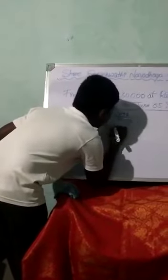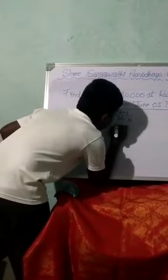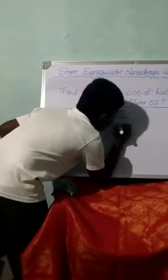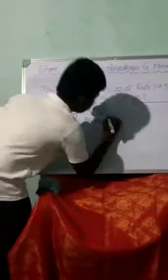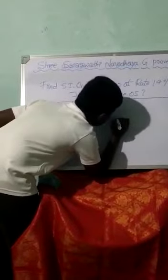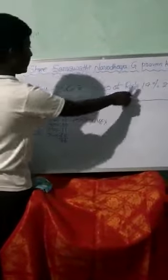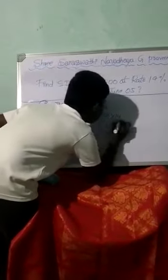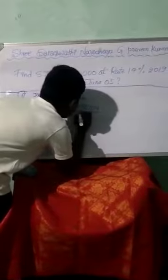Now we should do the multiplication. We substitute: 30,000 into 146, and the percentage rate is 14, divided by 100 into 365 days.